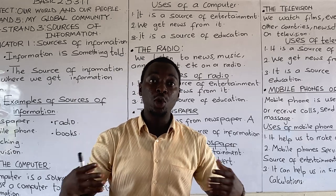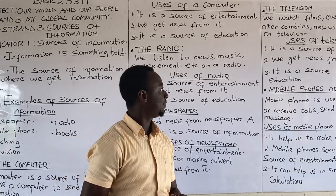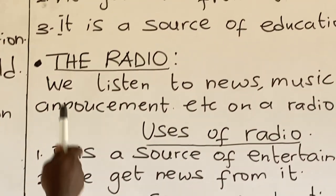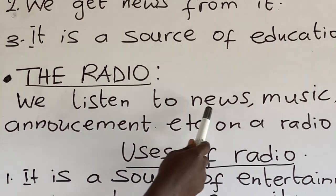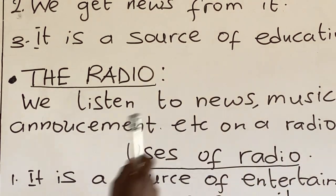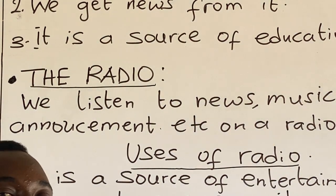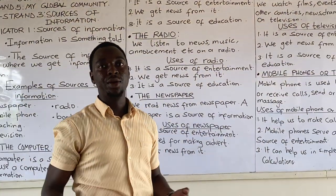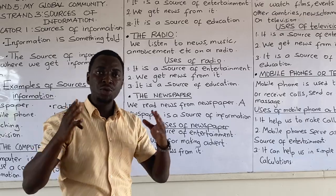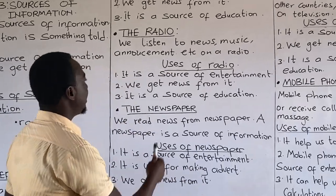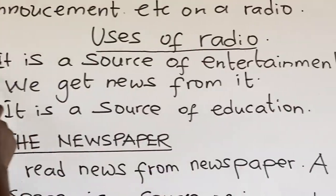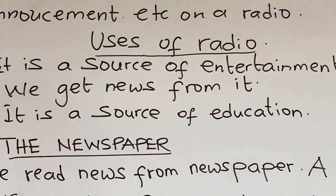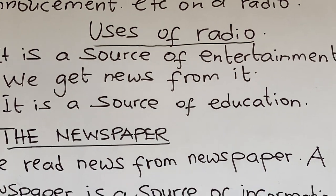Let's look at the second source of information — the radio. We listen to news, music, announcements on the radio. Let's look at the uses of a radio. One: it is a source of entertainment, because we listen to music from the radio and dance.